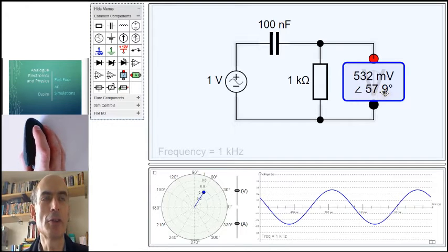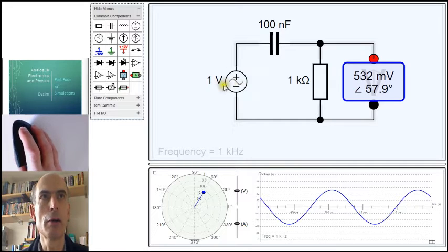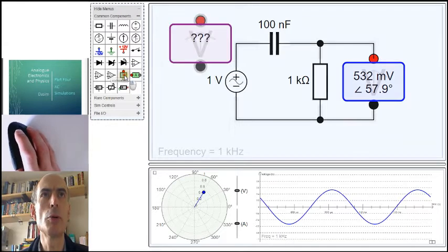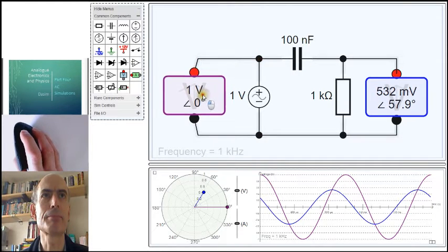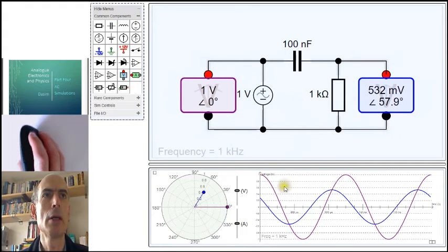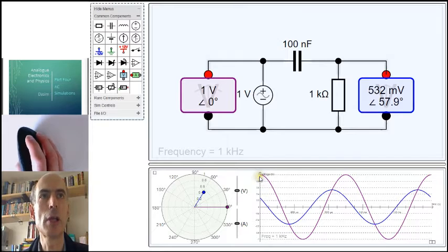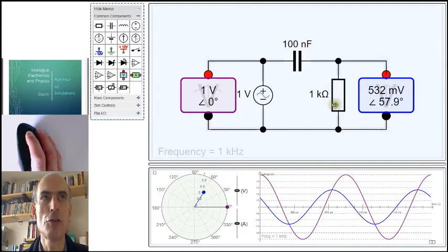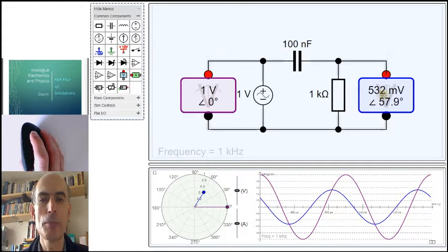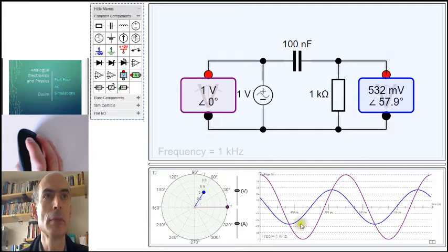That 57.9 degrees indicates that the oscillation measured by the voltmeter is out of phase with the oscillation measured by a voltmeter placed across the actual voltage source here. Let me put both of them on the graph and show you what I mean. The purple one is the voltage coming out of the voltage source. It oscillates from plus one to minus one, back up to plus one, back down to minus one. The blue one is the voltage across the resistor. Its maximum value is 532 millivolts. That's the peak value here.